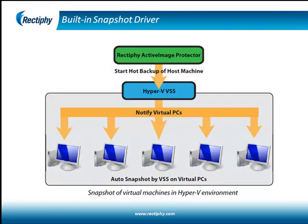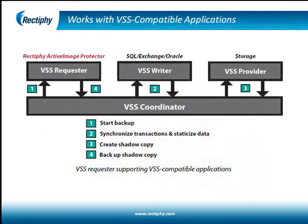Rectify Active Image Protector's built-in snapshot driver uses the Microsoft standard driver, thereby ensuring simple, safe, and clean incremental backups in VSS-aware environments. Active Image Protector is the world's first incremental backup imaging technology that uses the VSS snapshot driver and features sector tracking. Its unique sector tracking driver works with Microsoft's Volume Shadow Copy Services to perform safe incremental backups of applications such as SQL, Exchange, Oracle, and IIS at blazing speeds, even while the applications are active.